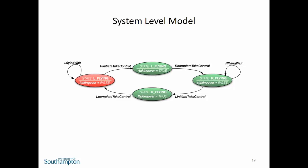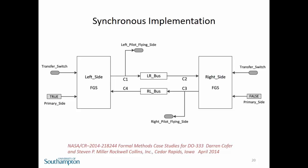We start with a system-level model using a formal modeling language — in the case study, a state machine. If you stand behind the pilots observing the system, you have two variables: left flying (initial state) and left taking over is false. Non-deterministically, the right-hand side initiates take control, we move into a state where left is still flying but right is taking over, then right completes take control and the right-hand side is flying. This simple, easily validated model represents the requirements — there are only two states, left flying and right flying; you can't be in both, and you must be in at least one.